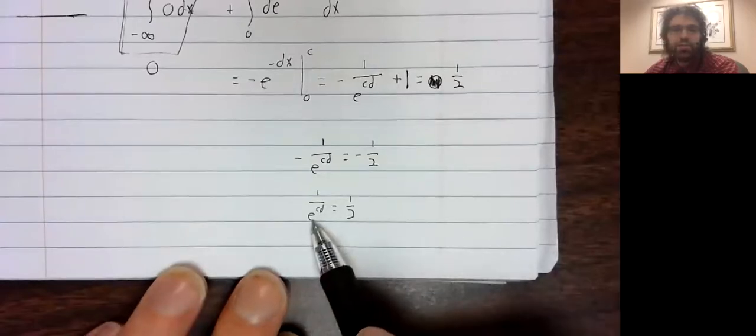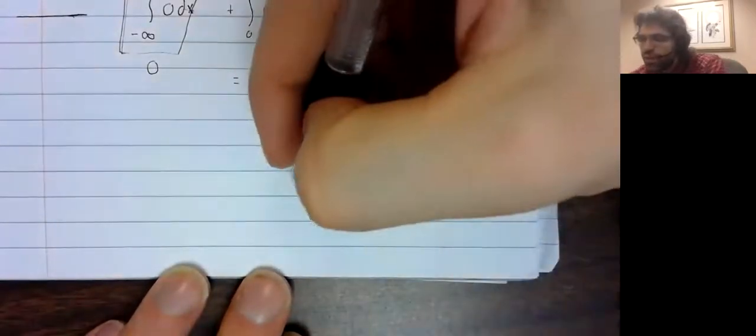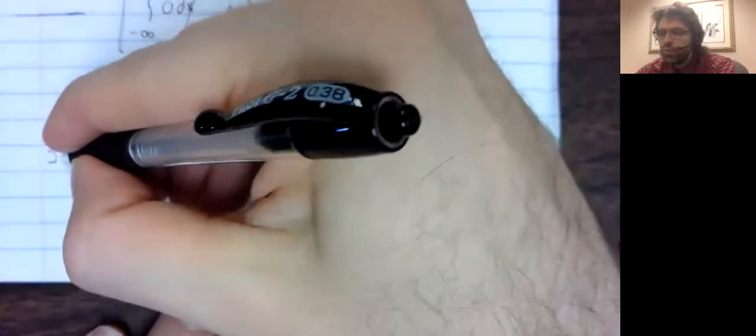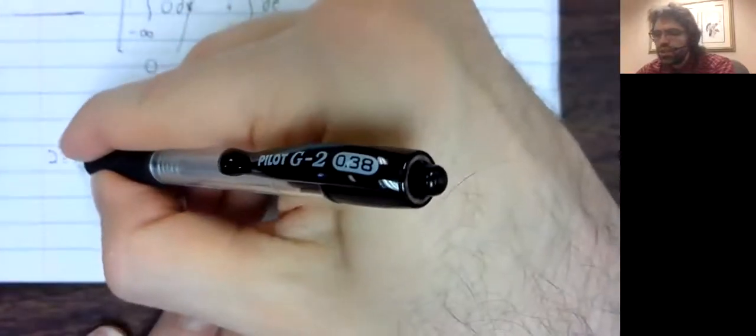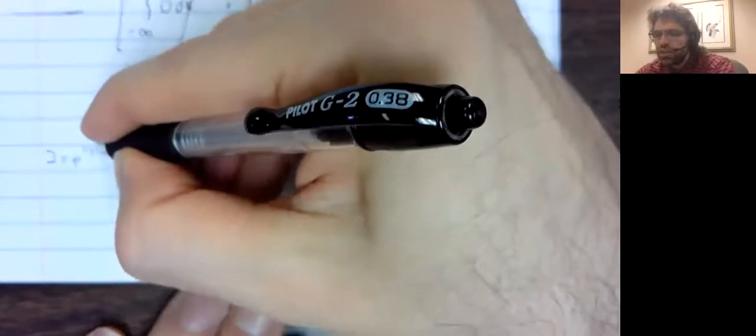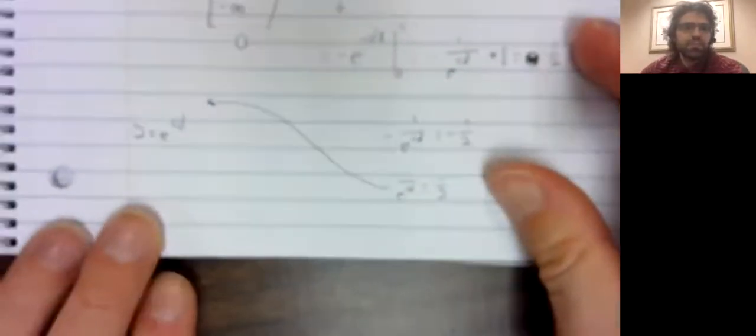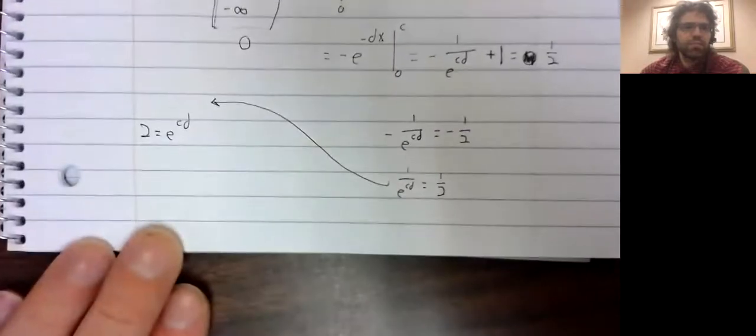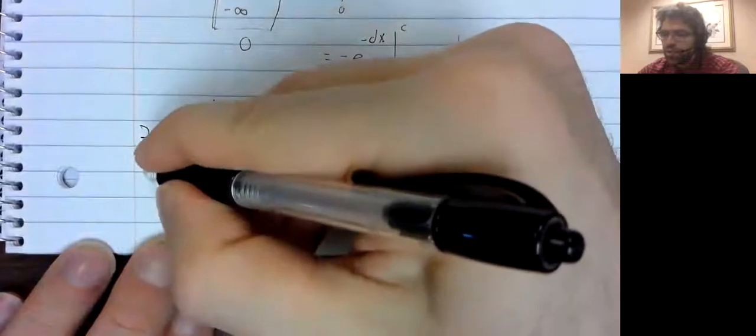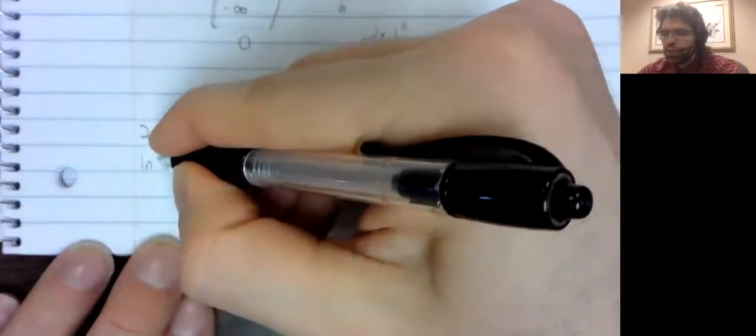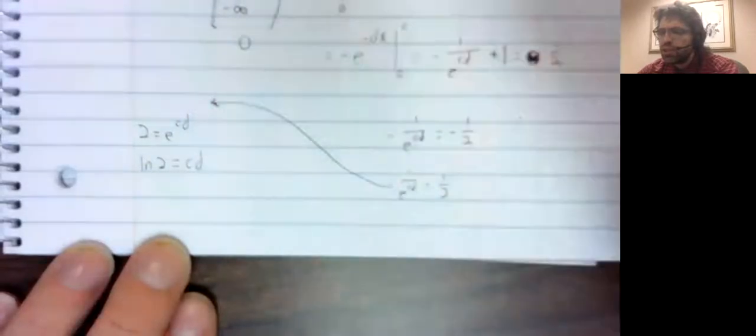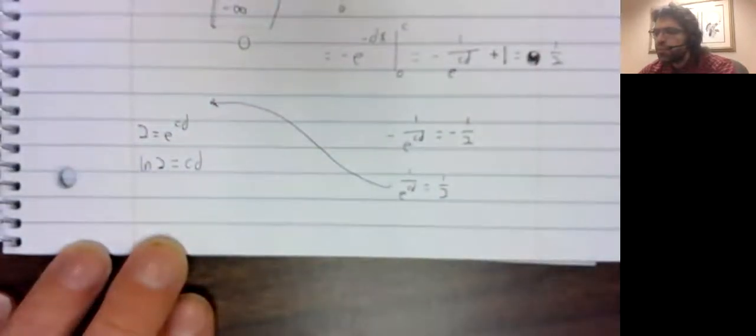Multiplying both sides by each of these denominators in turn, two equals e to the CD. The natural log of two equals CD.